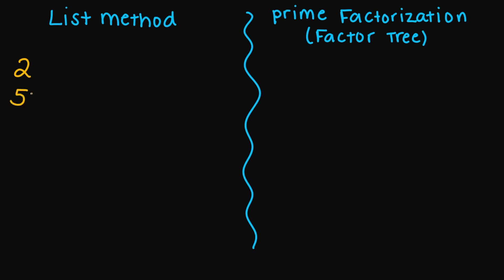Let's say we had to find the least common multiple between the number two and five. You can do the list method or the prime factorization method. So for my two and my five, when I'm thinking of multiples, think of multiplying, think of multiplication, think of your multiplication timetable. So you're going to list all the multiples of two, and then list all the multiples of five, and find the smallest common multiple that both share.